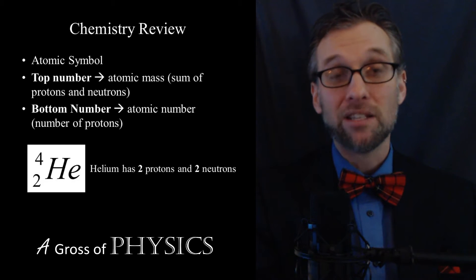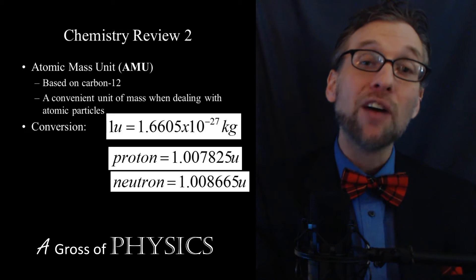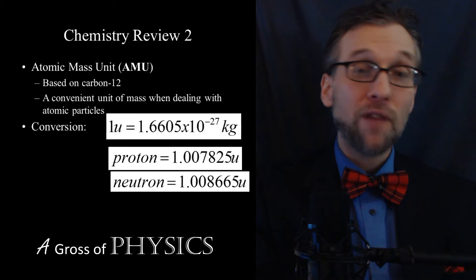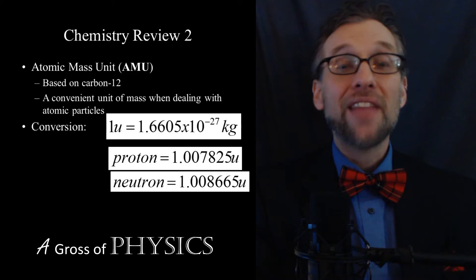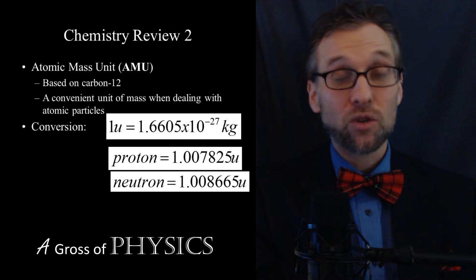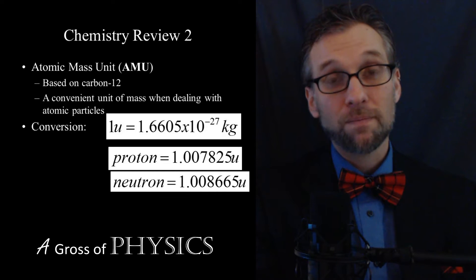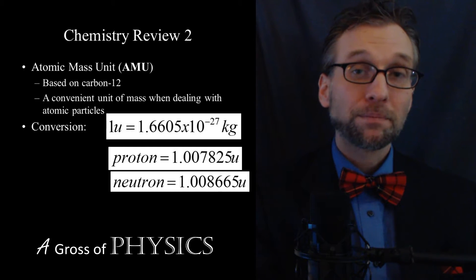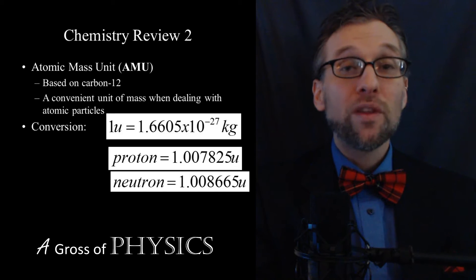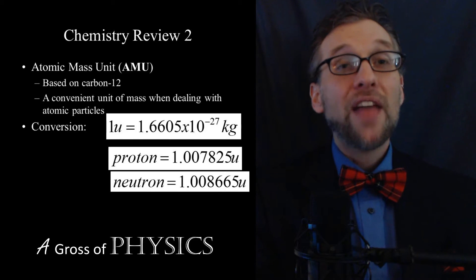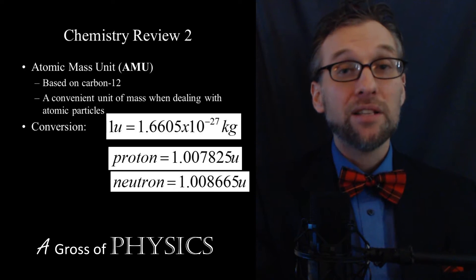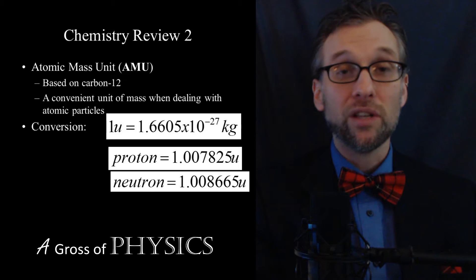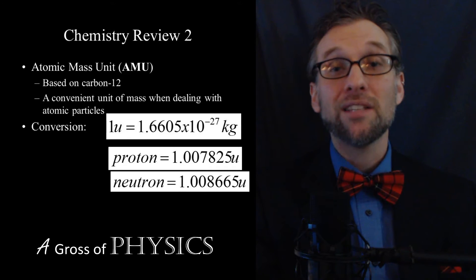The atomic mass unit is based on carbon-12, and it actually has a value in kilograms. 1 AMU, or 1U, is 1.6605 times 10 to the negative 27 kilograms. That can be rounded to 1.66 or 1.7, depending upon what textbook you use. That value allows us to convert the atomic mass into kilograms. The nucleus is made up of protons and neutrons. The atomic number tells us how many protons are in the nucleus, and the atomic mass is the combination of protons and neutrons.